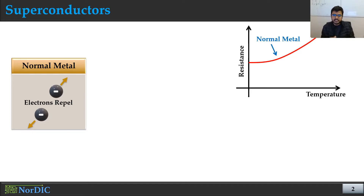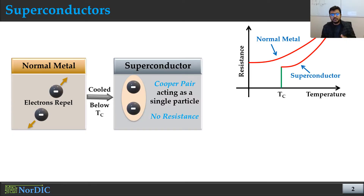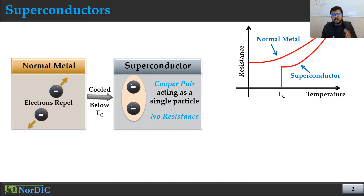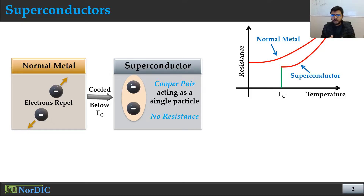As a result we get a voltage drop and also power dissipation in terms of heat. But if we keep the normal metals below a specific temperature, which we call the critical temperature, these two electrons don't repel each other anymore — they get paired and we call them Cooper pairs. They start to act as a single particle, and when we try to flow some current through these materials they don't show any resistance.